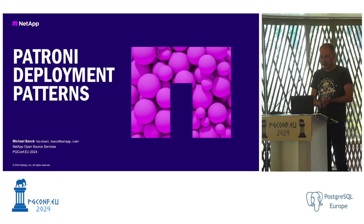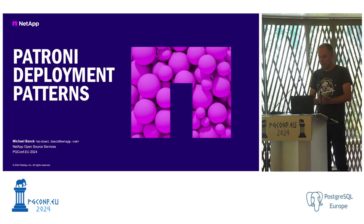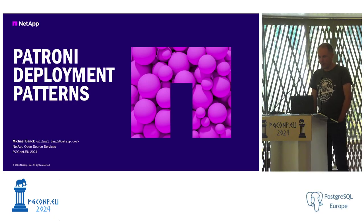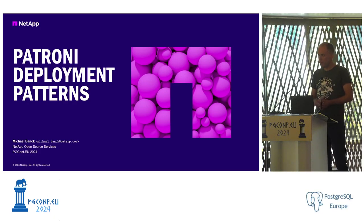He is the Patroni maintainer for Debian, and by definition also Ubuntu. Asking the audience: who's using high availability — not as an on-premise or VM thing, not as a cloud managed thing? And who's using Patroni specifically? Maybe 15–20% are not using Patroni, but Patroni seems to be the most popular high availability solution for Postgres nowadays, at least as an open source thing.